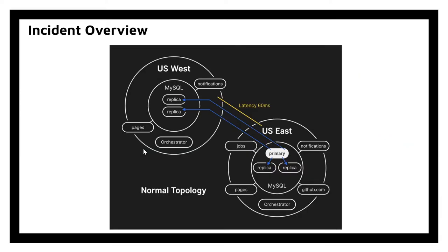So what exactly had happened? Here is a normal topology. Basically, there are a set of primary nodes in the US East Coast, and writes from the application tier are sent to these primary nodes. The primary nodes then send replica copies to data centers at both US East Coast and US West Coast.